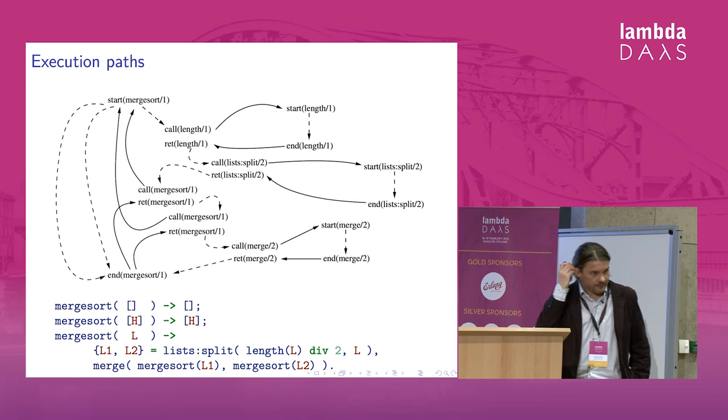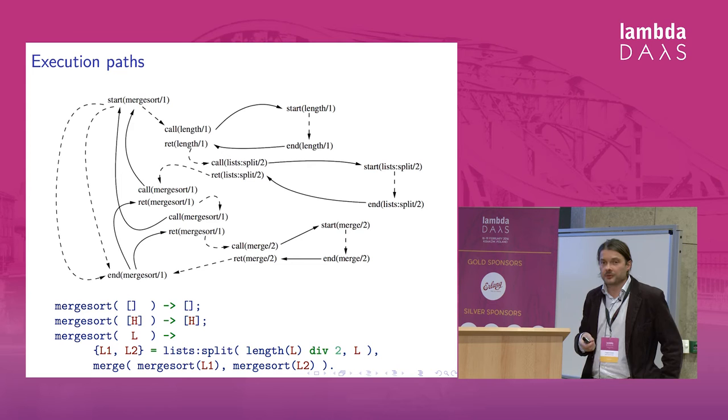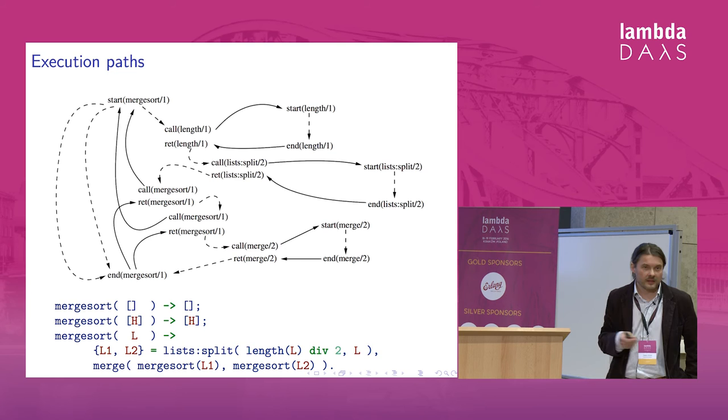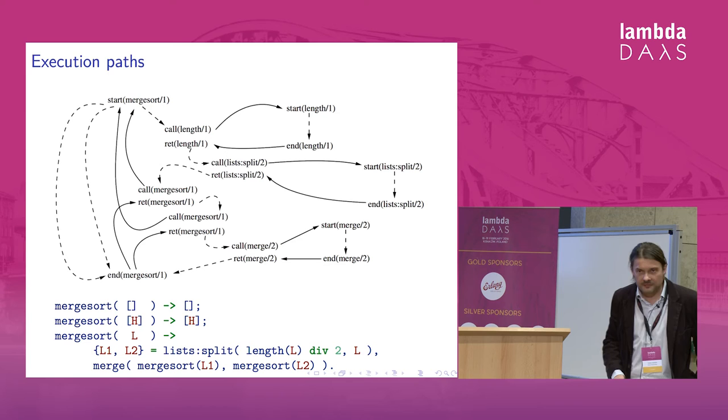Namely, there are two calls to merge sort in that single execution path. And now we should check whether these calls have independent parameters. But let's not deal with this at the moment.